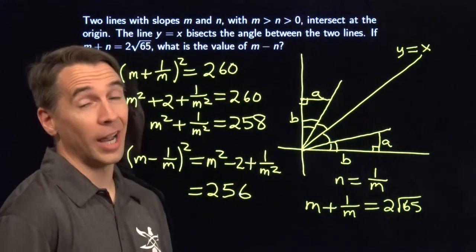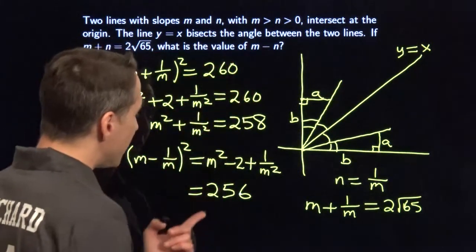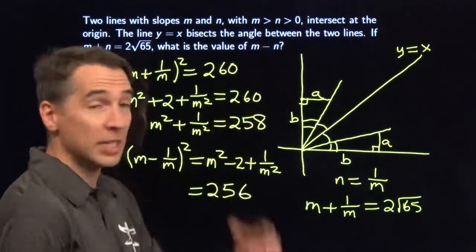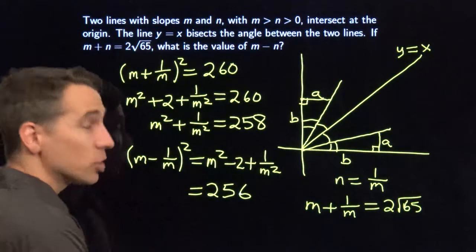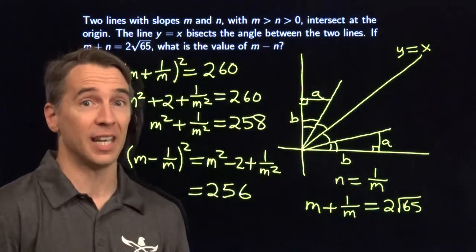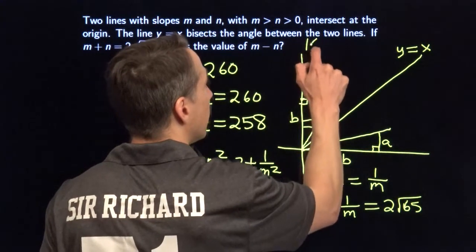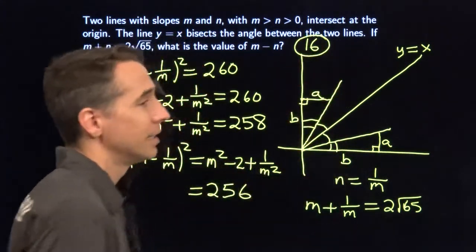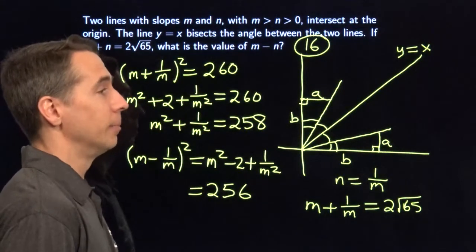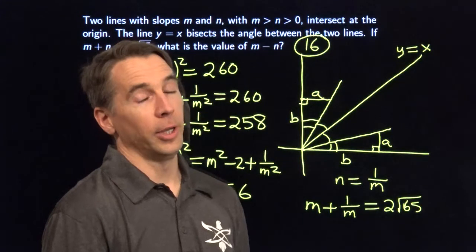And we never had to use the quadratic formula. Now I know that the square of m minus n is 256. They tell us up here that m is greater than n, so when I take the square root I take the positive square root of 256, which is 16. Alright, Harvey. You earned it. Thank you, Sir Harvey. That really hurt.